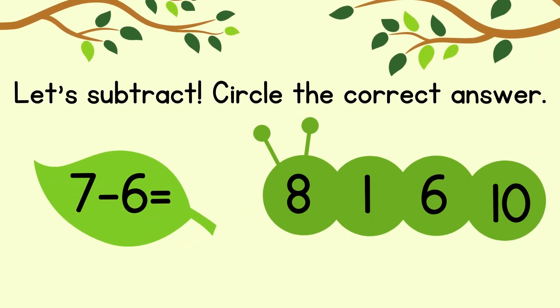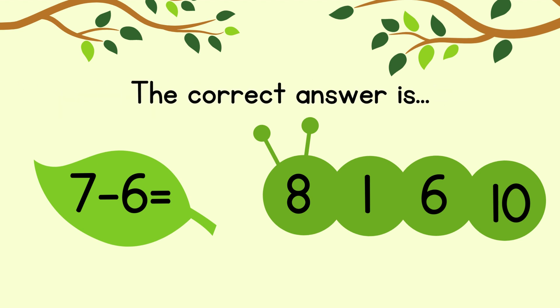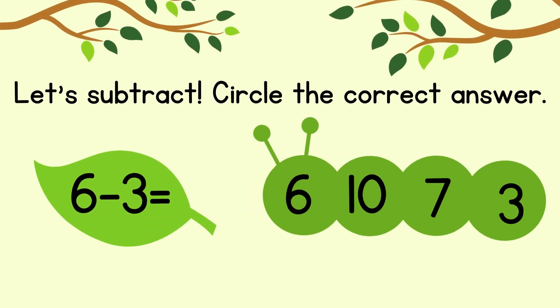Circle the correct answer. 7 minus 6 equals. The correct answer is 1. 6 minus 3 equals.